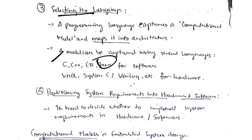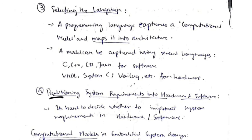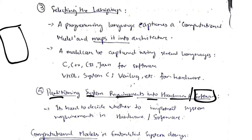The third issue in hardware-software co-design is selecting the language. For software, languages such as C, C++, and Java are used; for hardware, VHDL, Verilog, and SystemC are used. The fourth issue is partitioning — deciding whether system requirements will be implemented in hardware or software. This is a difficult decision that depends on many other factors.